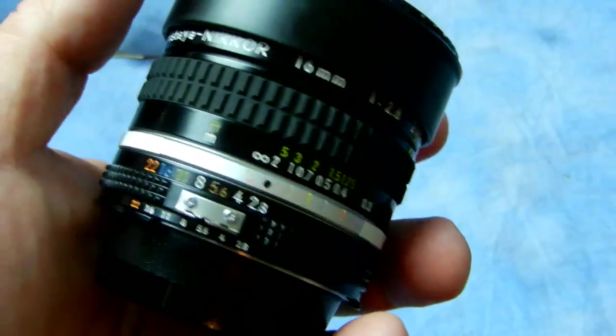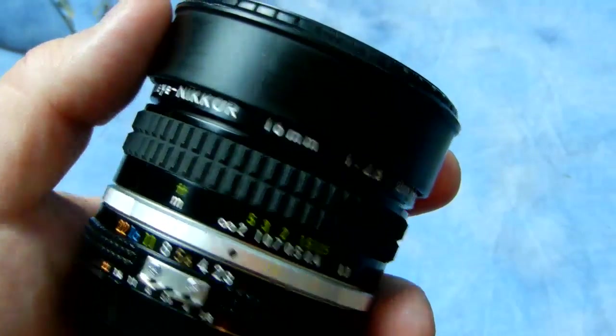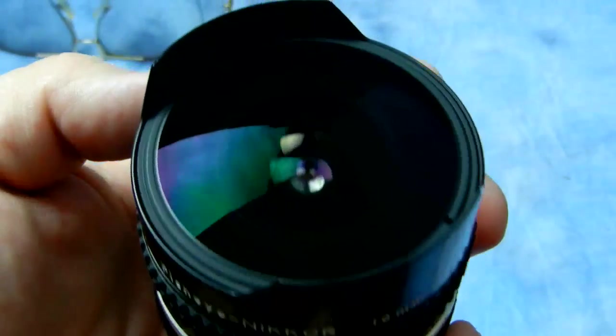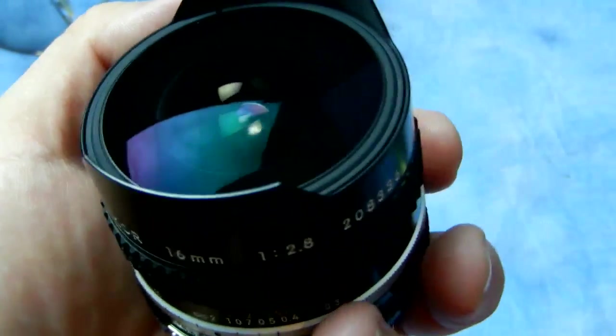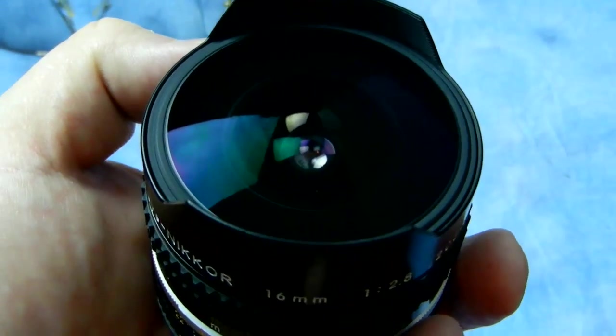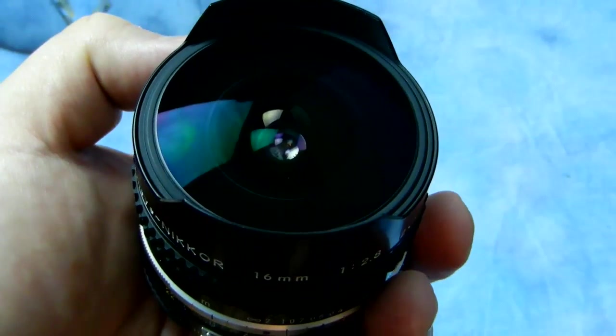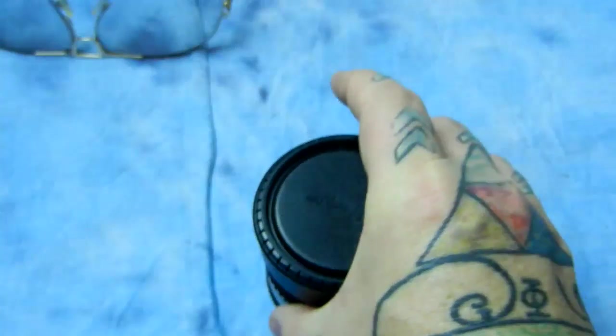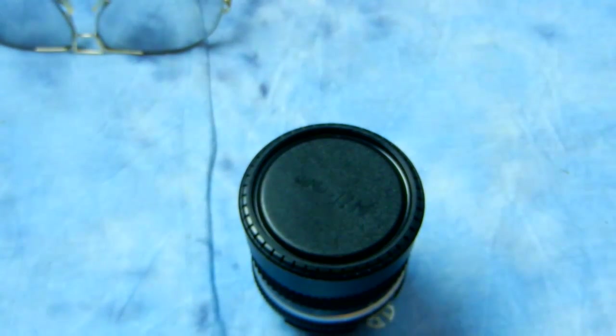Good choice. So now folks, now you know what balsam separation is on an otherwise absolutely gorgeous fisheye Nikkor lens, absolutely gorgeous, looks like it was used two or three times and put away, which it was except they put it away in the wrong place. This is what caffeine will do to you. So folks, that's what Nikon and Canon mean when they tell you don't store your lenses in hot places. If you don't store your lenses in hot places, catch you later.